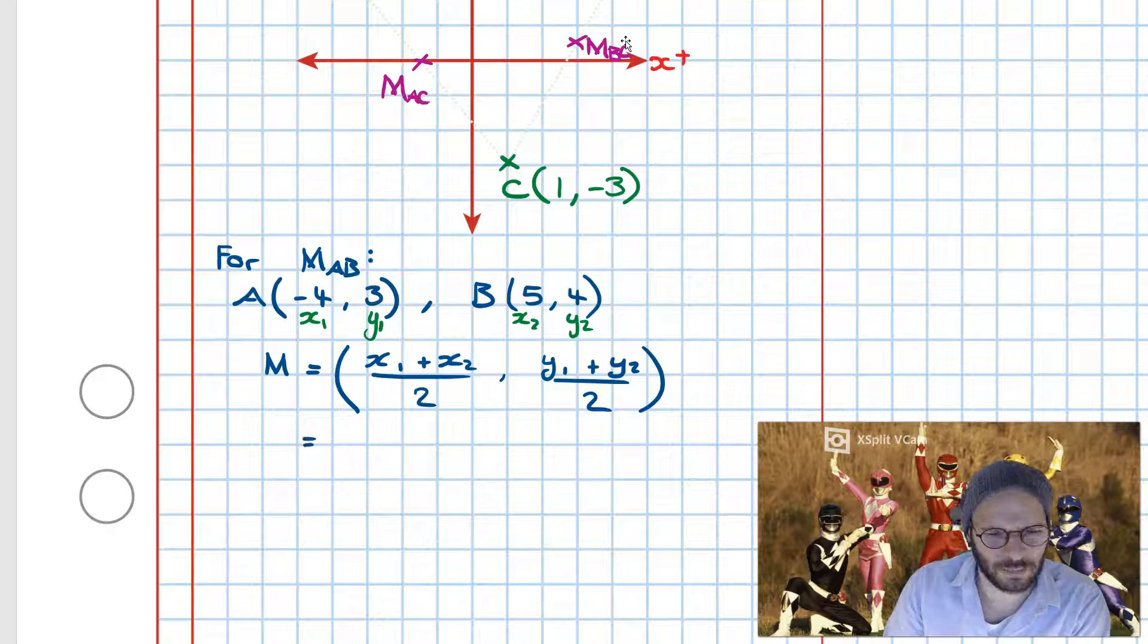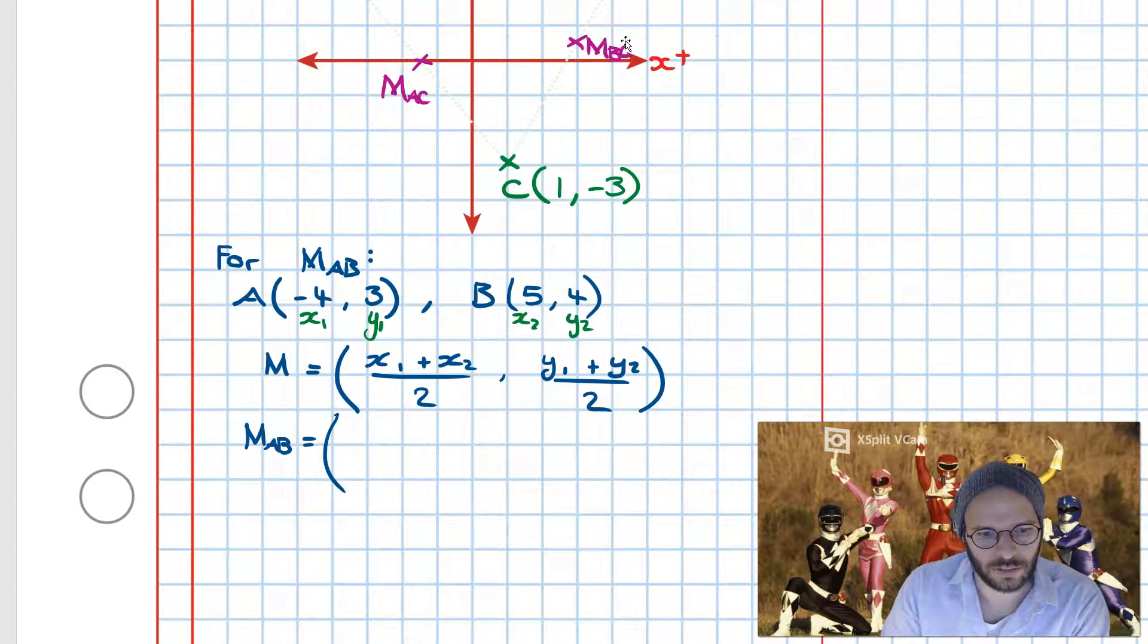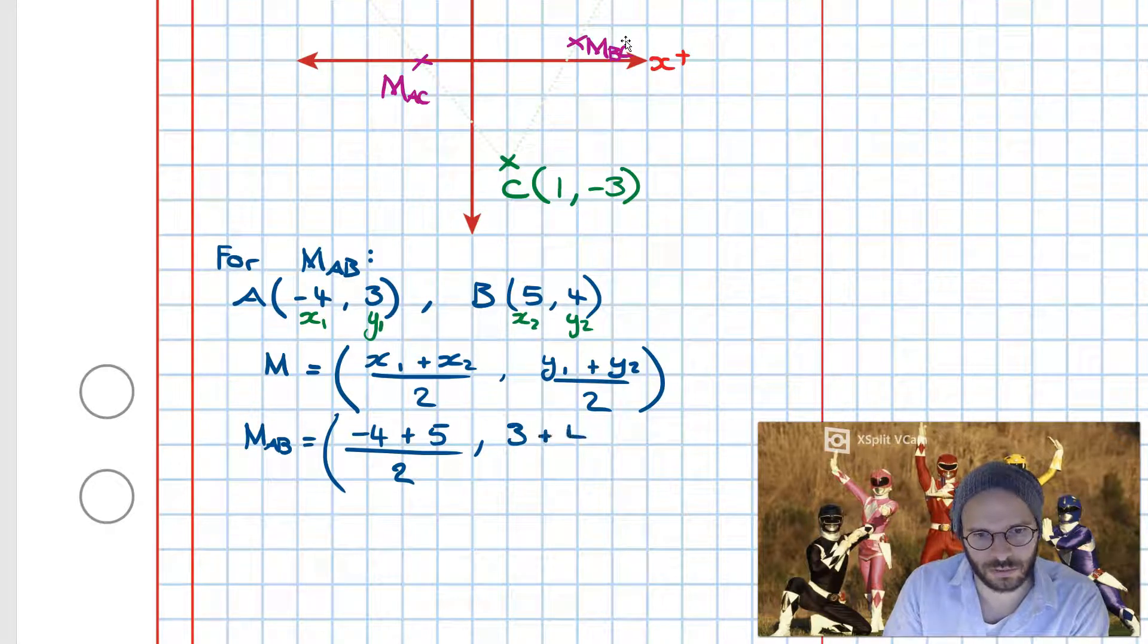Now next step is we substitute in the values that we're solving for, so we're going for the midpoint of A, B, and then I'm going to write minus 4 plus 5 divided by 2, and the average of the y's, 3 plus 4, all divided by 2.